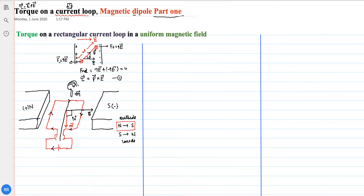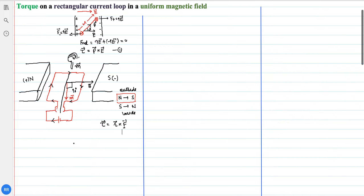Now regarding torque: torque is determined by the formula τ = r × F, so we need to determine the force acting on this current loop. To find the force on a current loop in a magnetic field, we use the formula: force = I (L × B), where I is current (a scalar), L is the length of the conductor taken in the direction of current, and B is the external magnetic field.